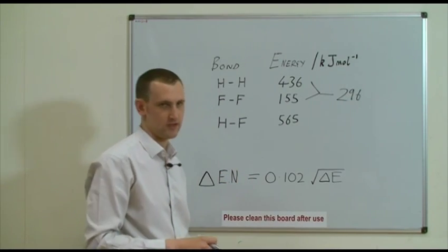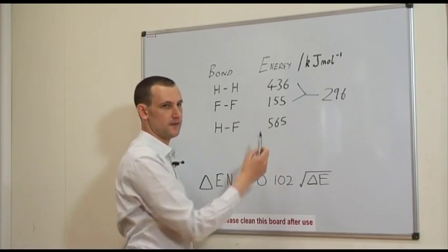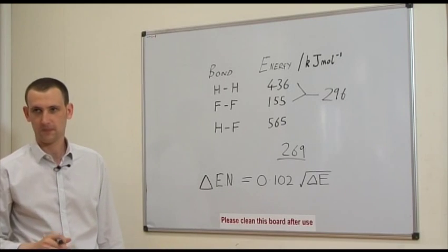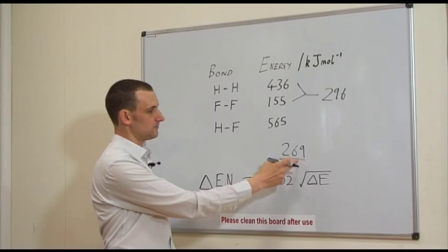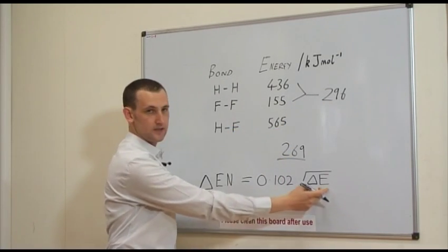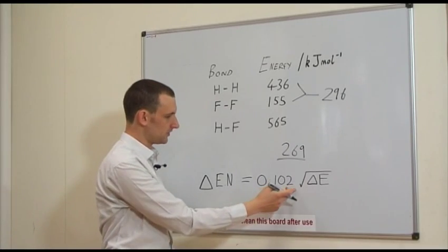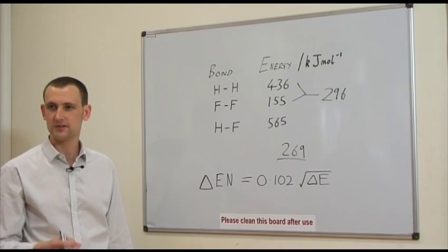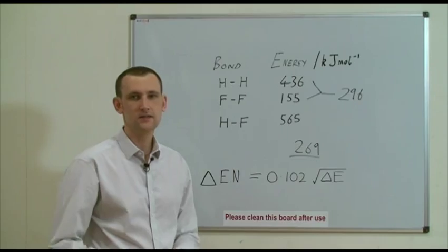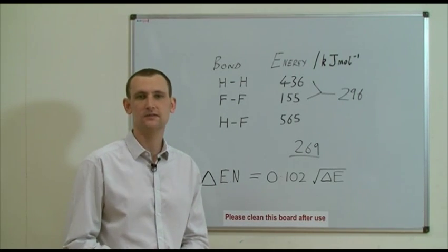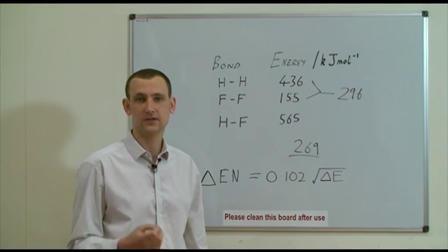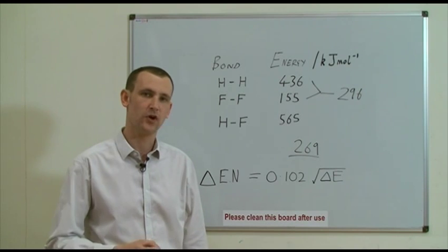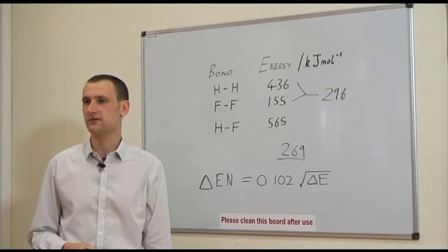He then generated his electronegativity values by taking the difference between the true value and the average of the homoatomics — a value of 269 kJ per mole — and putting it into this formula. This delta E is the difference between the true value and the average. He took the square root of this and multiplied it by the constant 0.102, giving the delta electronegativity value — the difference in electronegativity between the two atoms. For the HF bond, this gives an electronegativity difference of 1.7, which, taking the defined value of 4 for fluorine, gives an electronegativity value for hydrogen of 2.3. By repeating this procedure with a large number of bond enthalpy values, an average for hydrogen is found of 2.2, and a similar procedure allows values for the rest of the elements to be determined.